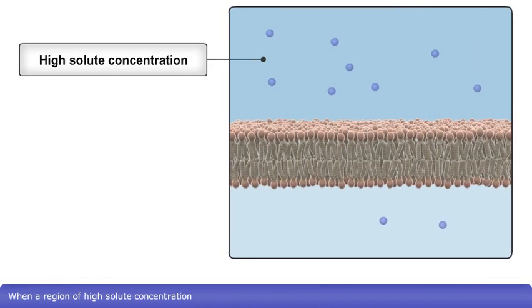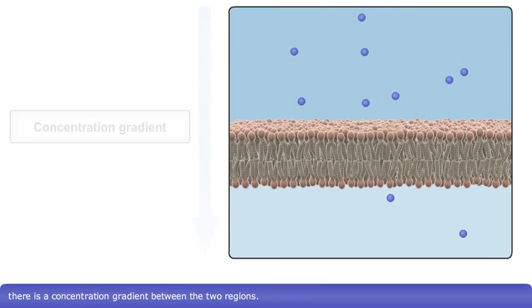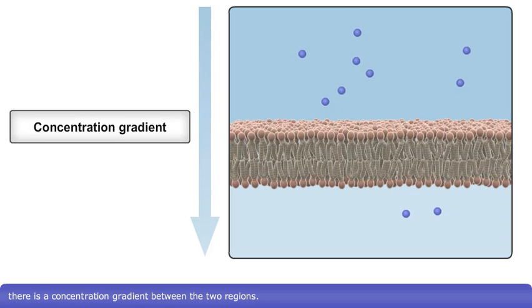When a region of high solute concentration is separated by a plasma membrane from a region of low solute concentration, there is a concentration gradient between the two regions.